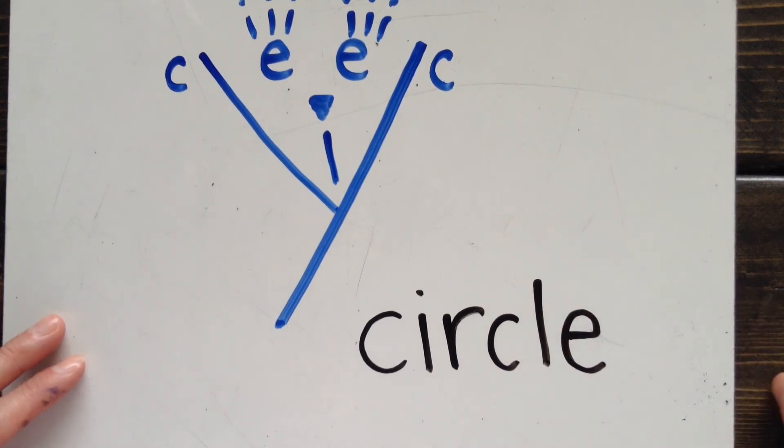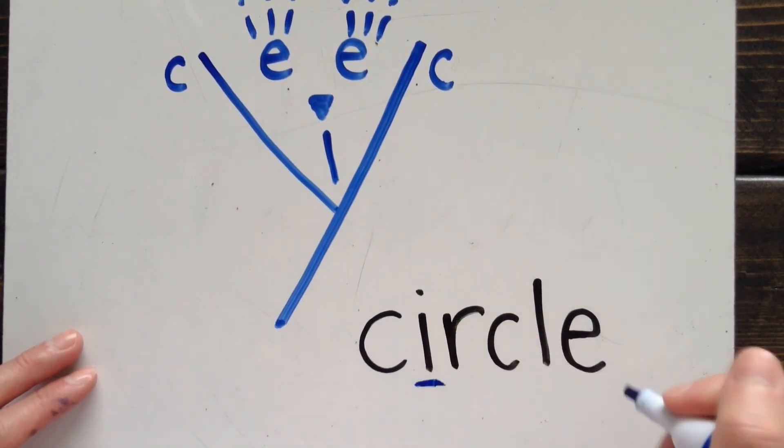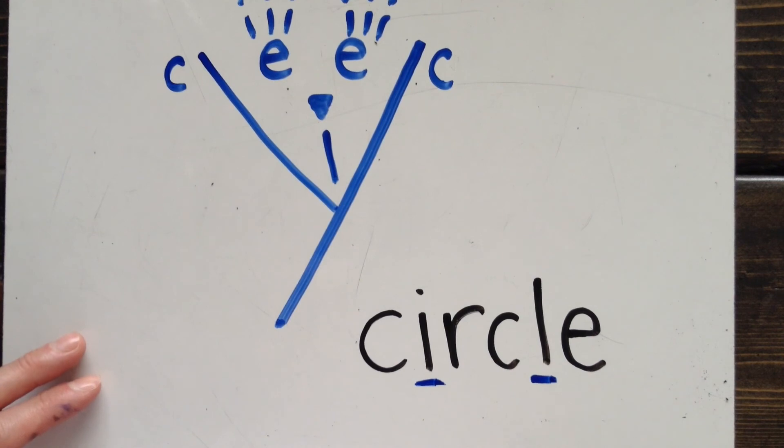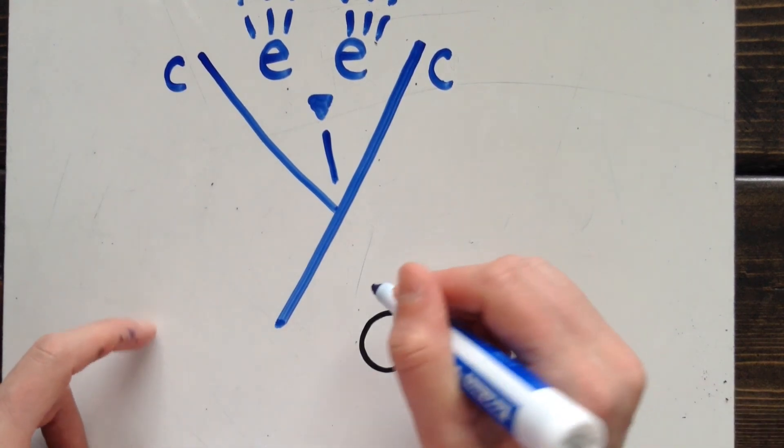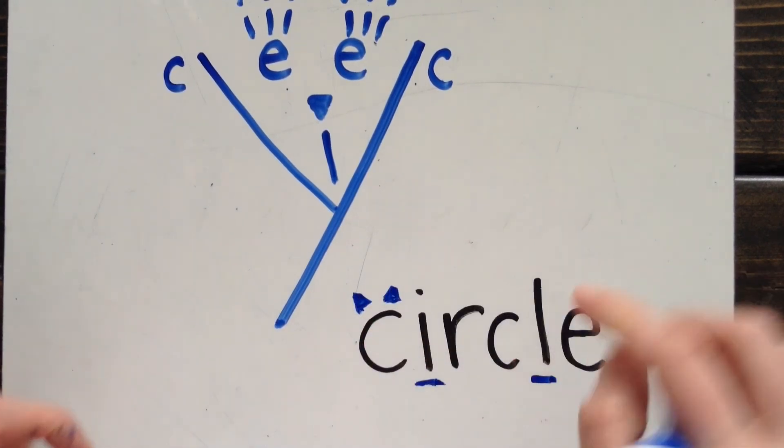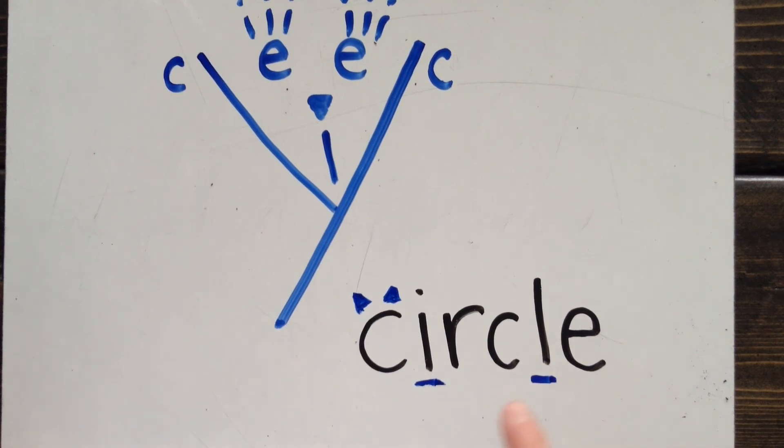Here's our last word. What type of C is in the word at the beginning? What type of C is in the word in the middle? Check your picture. This is the word circle. You might notice the cle at the end, which is a blend.